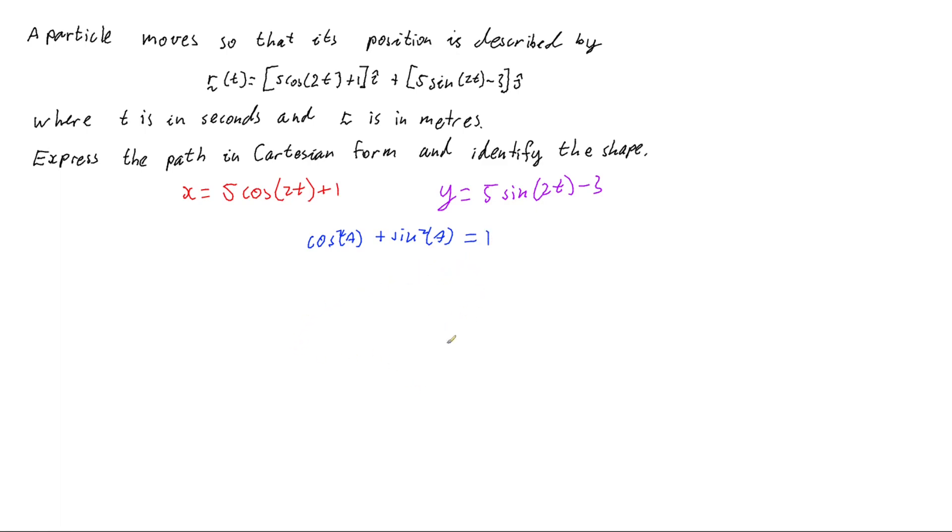Cos squared plus sine squared equals 1. And we can use this because 2t is what the value of both the sine and the cos are. So they do line up and they're the same value. So we just need to now get our x and y equations in the form of cos squared and sine squared.